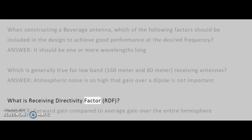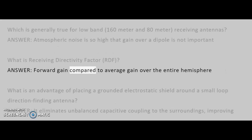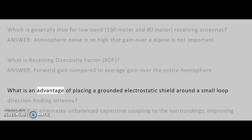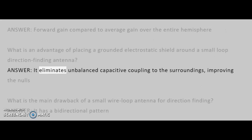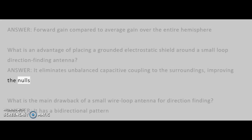What is receiving directivity factor (RDF)? Answer: Forward gain compared to average gain over the entire hemisphere. What is an advantage of placing a grounded electrostatic shield around a small loop direction finding antenna? Answer: It eliminates unbalanced capacitive coupling to the surroundings, improving the nulls.